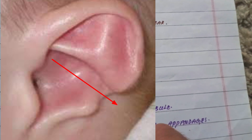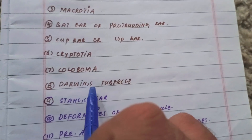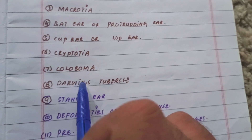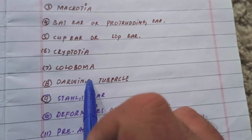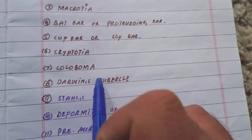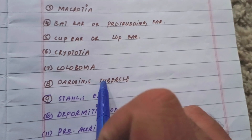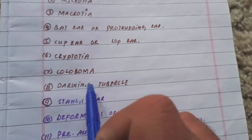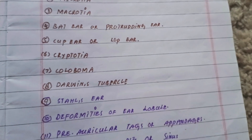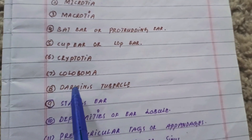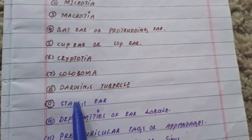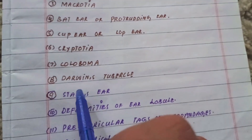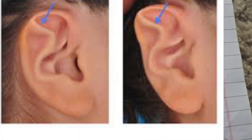The eighth condition is Darwin's tubercle. It is a congenital disorder in which there is a pointed tubercle present on the upper portion of the helix, and it usually represents the apex of the pinna of lower animals. The ninth condition is Stahl's ear, in which the upper crus of the antihelix is duplicated.